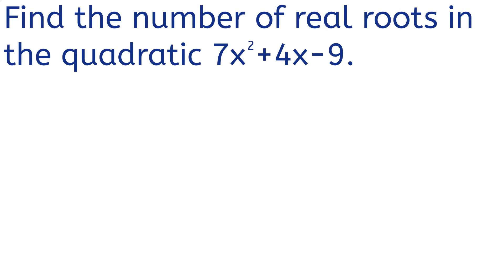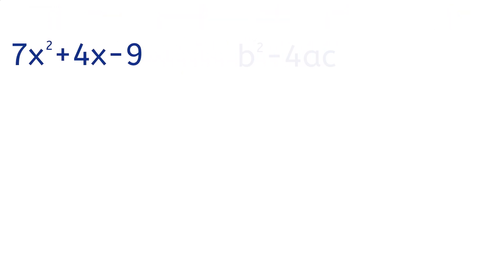Now that we know the equation of the discriminant and what it tells us, let's apply it to some problems. Find the number of real roots in the quadratic 7x squared plus 4x minus 9. Firstly, we have to remember our equation, b squared minus 4ac.